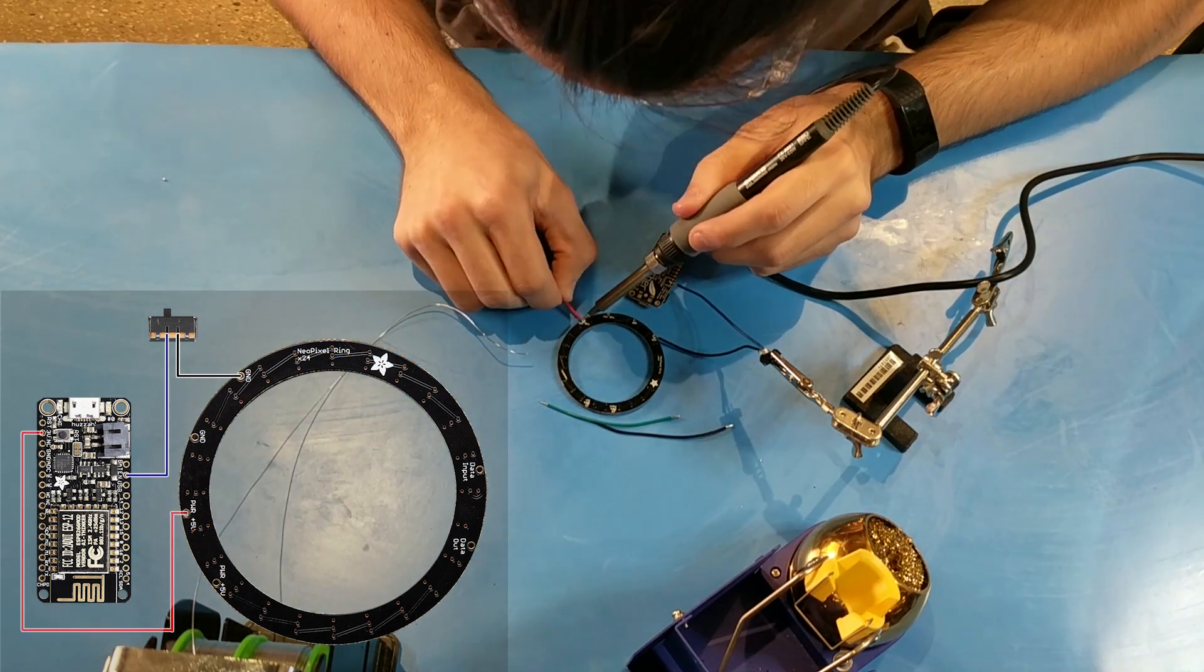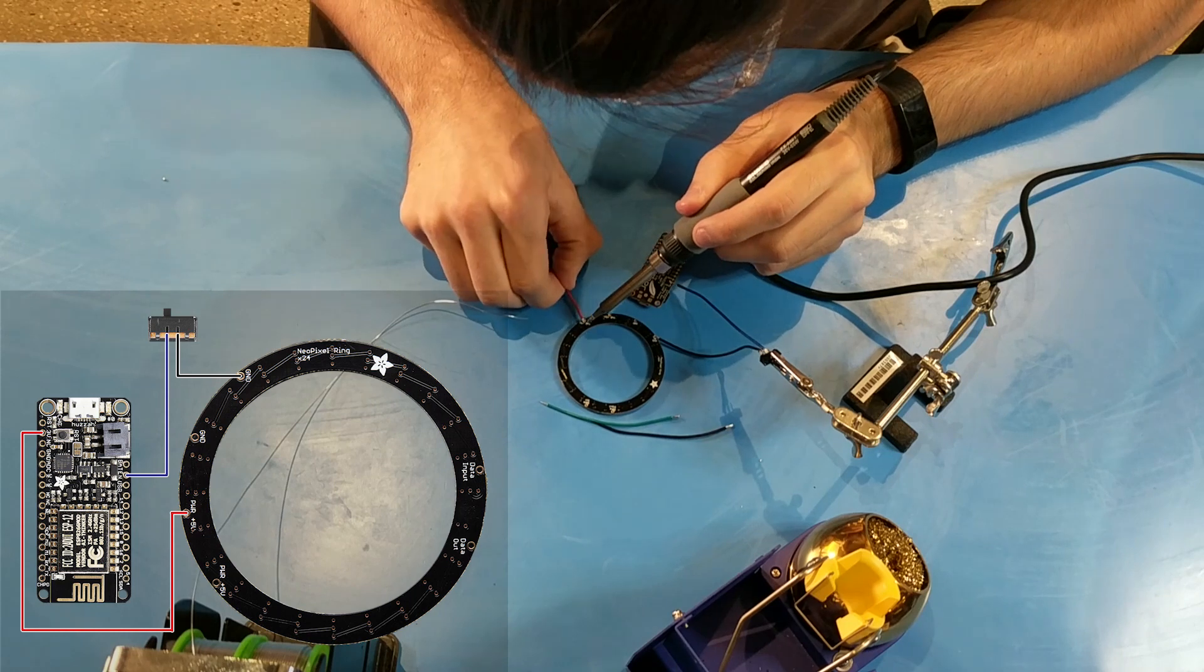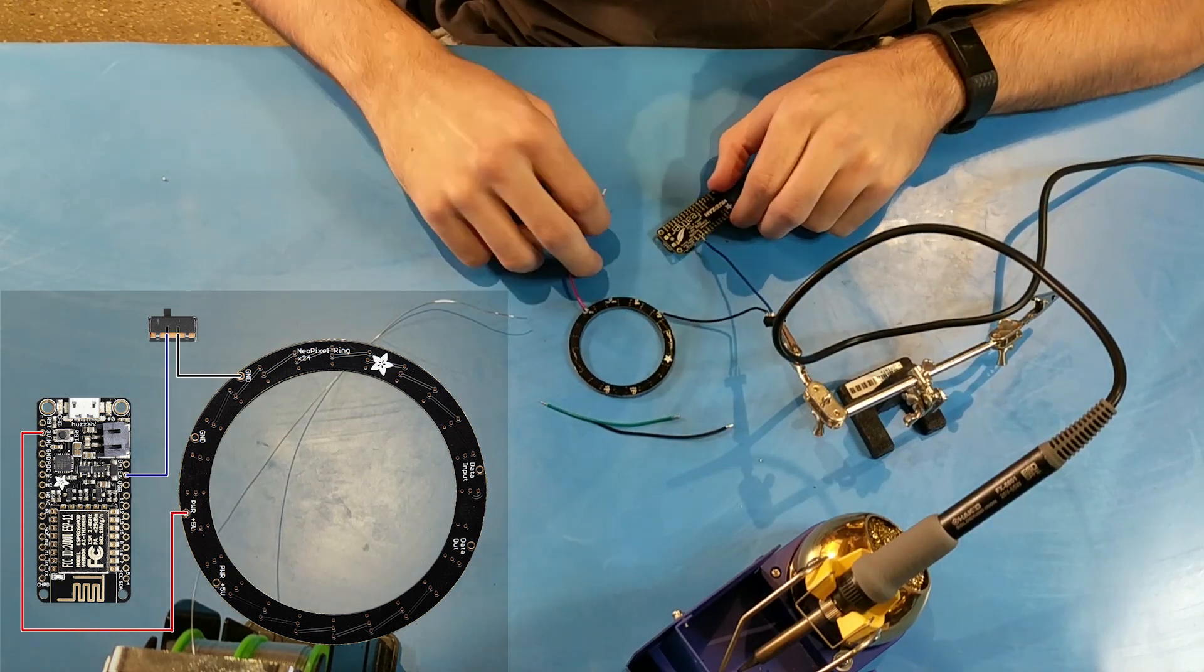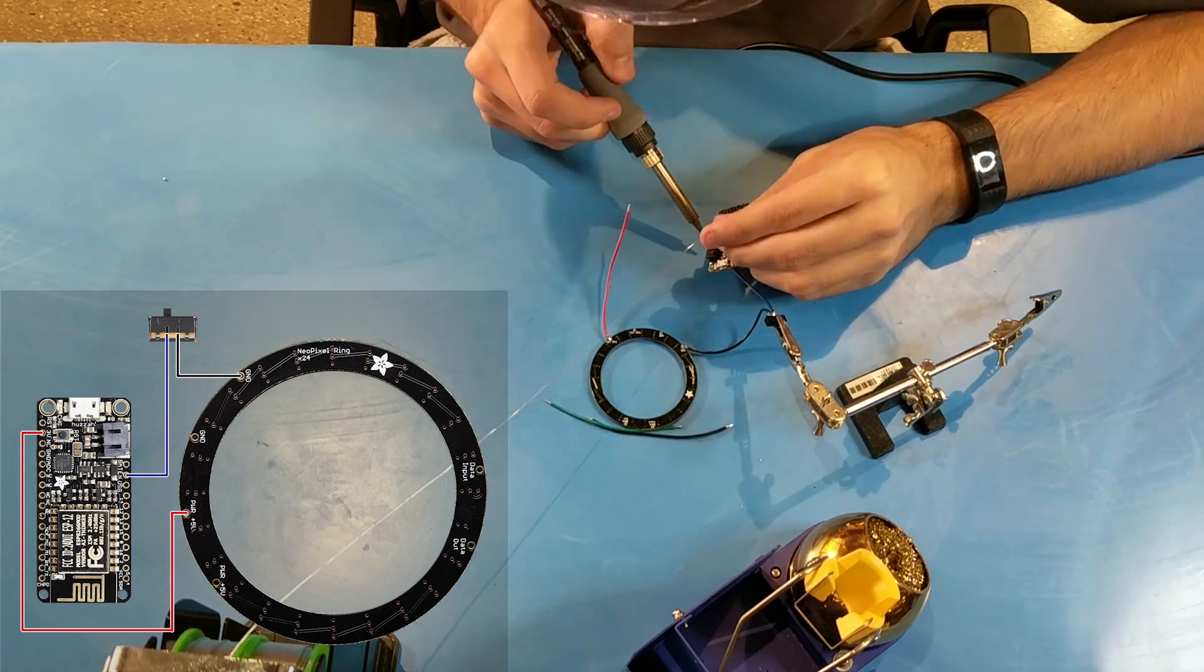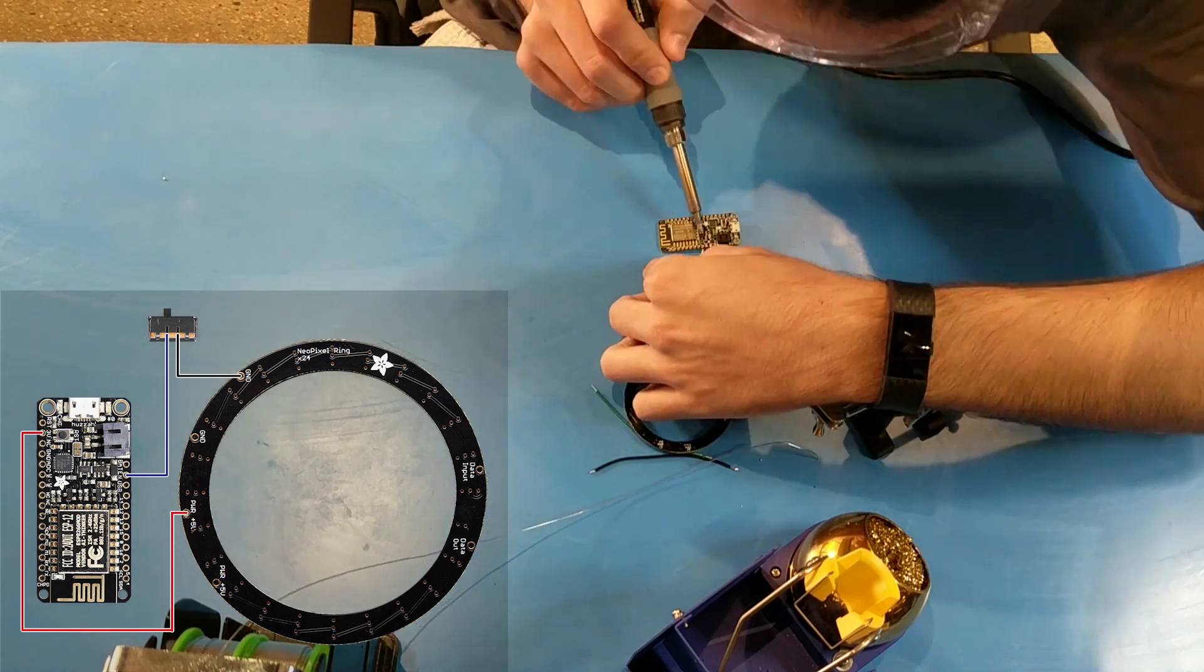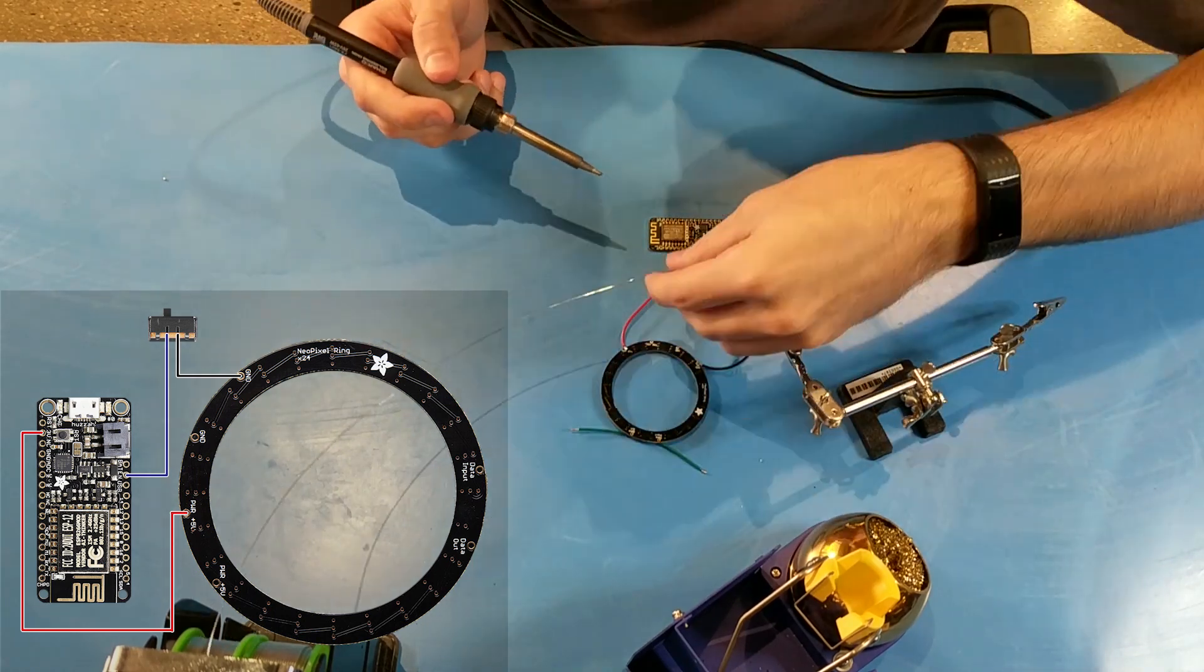So on the back of the Neopixel ring, there's a wire that says power plus 5 volts. So that wire we're going to use red for. The other end of that wire is going to the feather. That is your 5 volt rail.